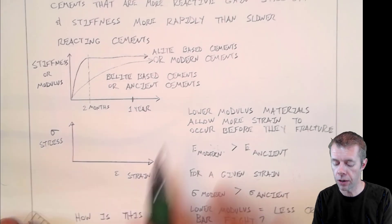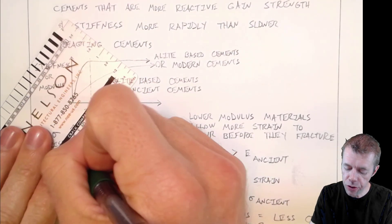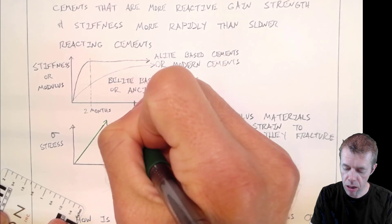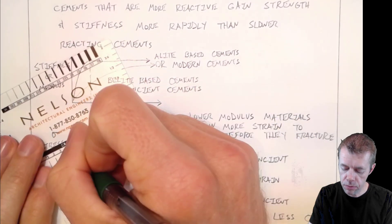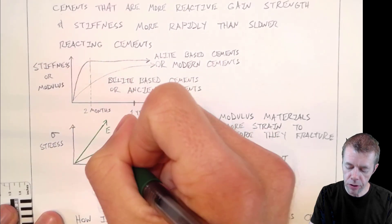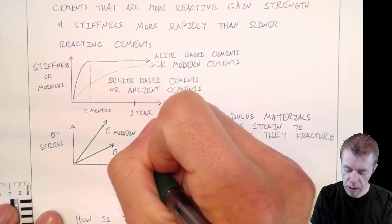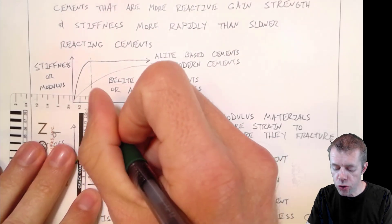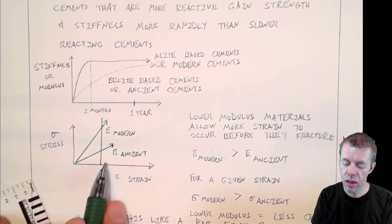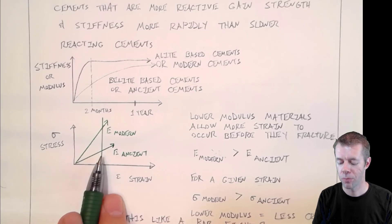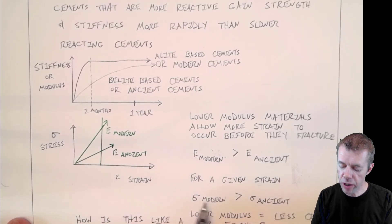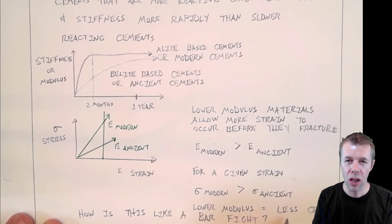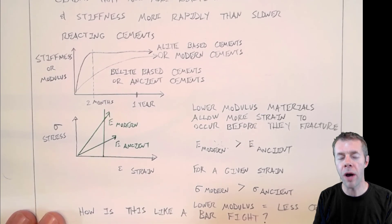And if something has a higher modulus, it's up here. This would maybe be our modulus of our modern cements. And if something has a lower modulus, that would be down here. That would be the modulus of the ancient cements. And so for a given amount of strain, this is for a given amount of stretch, that you're actually going to produce way more stress in our modern cements than we will our ancient cements. So higher modulus, for a given amount of strain, means higher stress. So lower modulus is going to mean less cracking.